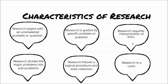The characteristics of research: research begins with an unanswered problem or question. Research isn't something you can just do randomly — you have to think of a problem or question. That's why we have a statement of the problem or problem objectives. Research is guided by a specific problem or question, requires interpretation of data, divides major problems into sub-problems, follows a logical procedure for data collection, and research is a cycle — it goes around continuously.